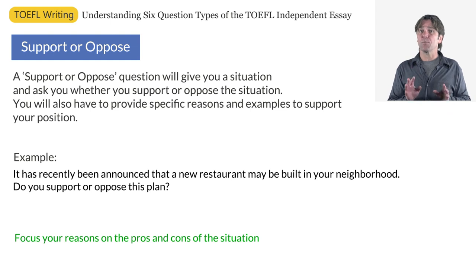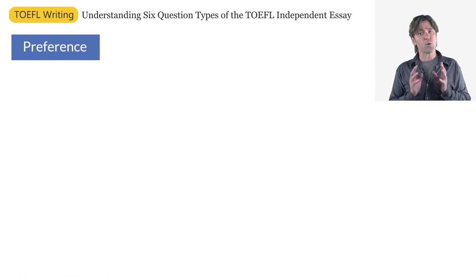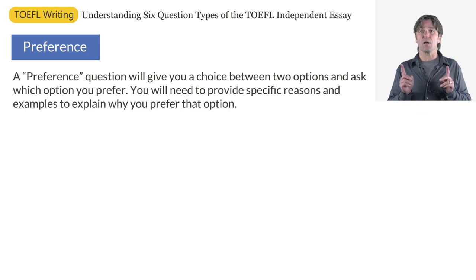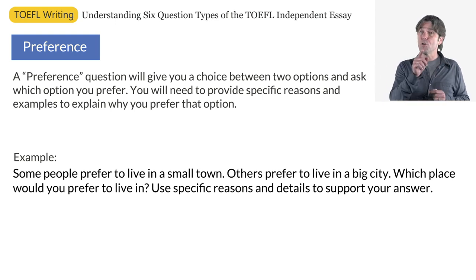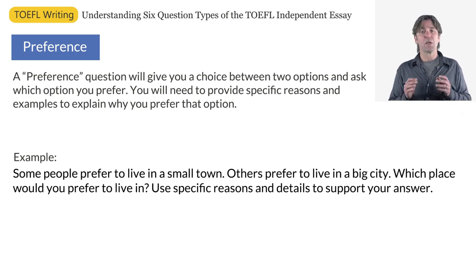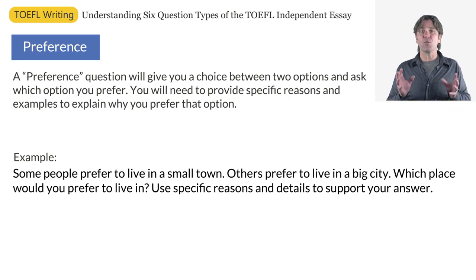Now the next question type on our list is a preference question. A preference question will give you a choice between two options and ask you which option you prefer. You'll need to provide specific reasons and examples to explain why you prefer that option. Here is an example: Some people prefer to live in a small town. Others prefer to live in a big city. Which place would you prefer to live in? Use specific reasons and details to support your answer. Generally speaking, preference questions are personal in nature. They ask about your preference, not what you think is best for people in general or a group of people. For this reason, you can rely on personal experience and reasons to support your answer.